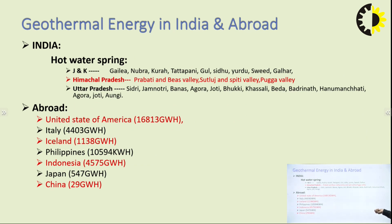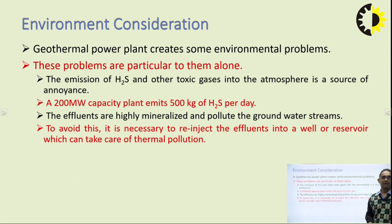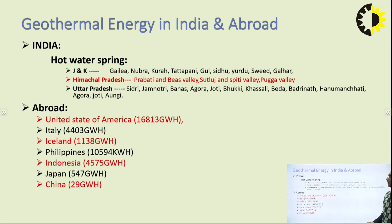There are various sites of geothermal energy in India and abroad. In India, hot water springs are found in Jammu and Kashmir and Himachal Pradesh at locations such as Galia, Nubra, Kuraha in J&K, and Himachal's Parvati and Beas Valley. In Uttar Pradesh: Sigdi, Jamnotri, Banas, Agora, and Jyoti. Abroad, sites exist in USA, Italy, Iceland, Philippines, Indonesia, Japan, and China. Environmental considerations will be looked at in the next class. Thank you.